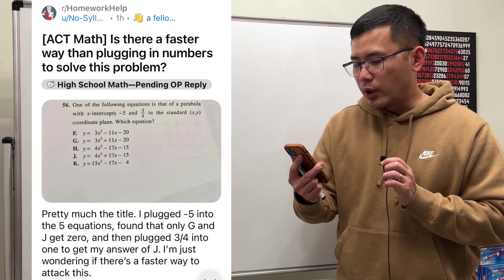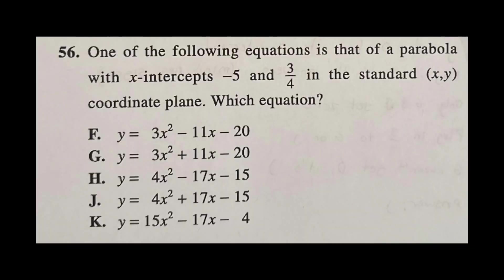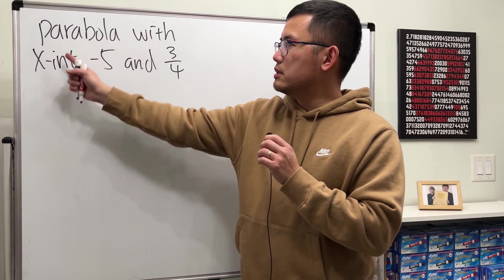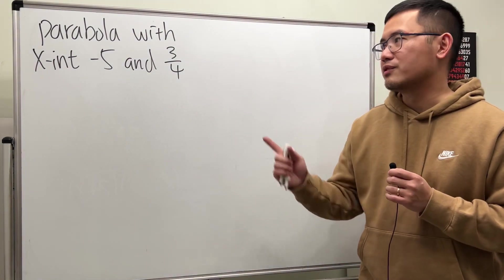ACT math, is there a faster way than plugging in numbers to solve this problem? The problem is, one of the following equations is that of a parabola with x-intercepts negative 5 and 3 over 4 in the standard x and y coordinate plane, which equation though. In fact, if this is the only given information, we could have infinitely many answers for that.